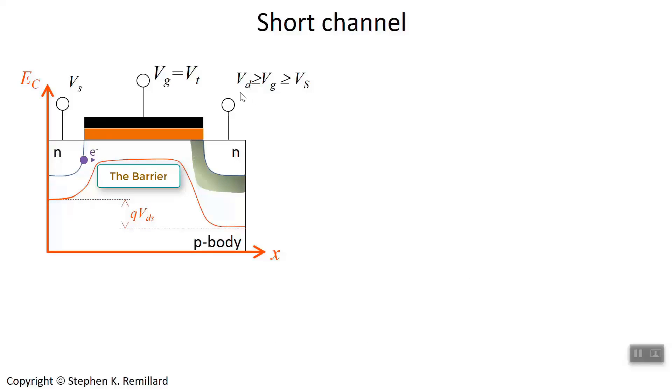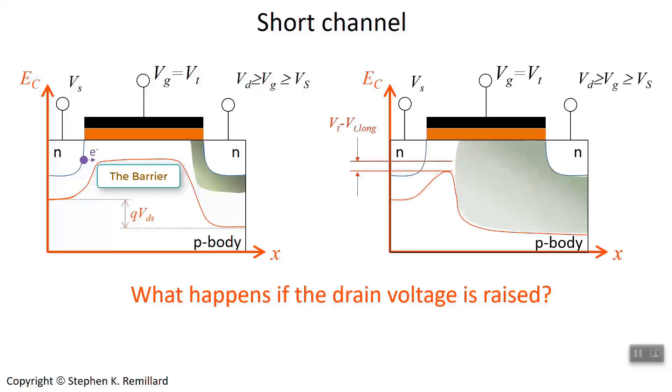I've deliberately made the drain appear short, just for effect. This is our starting position, where the drain is greater than the source, and the gate is at threshold. Let's raise the drain voltage. Now when we raise the drain voltage, this depletion region gets a lot larger, because we are reverse biasing the junction. And it really invades our barrier. This conduction band edge gets dragged down a lot. The rolling off has to start really close to the source. Consequently, this barrier never gets all the way up to the height it had been at, and it starts to go back down.